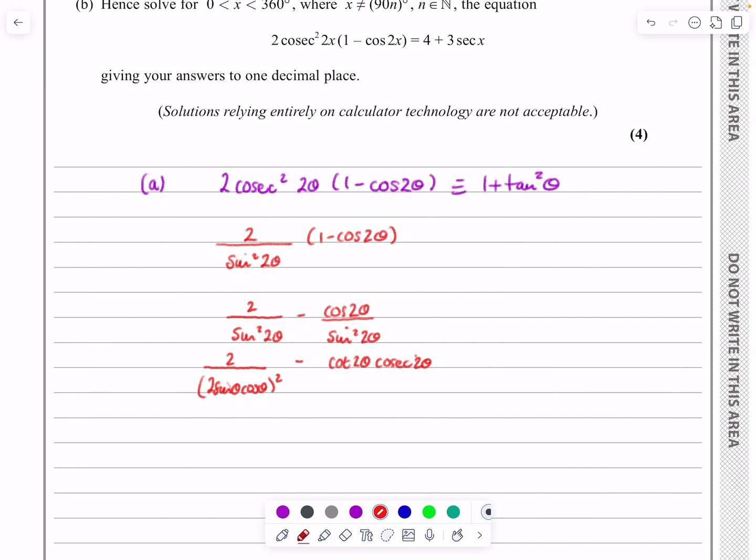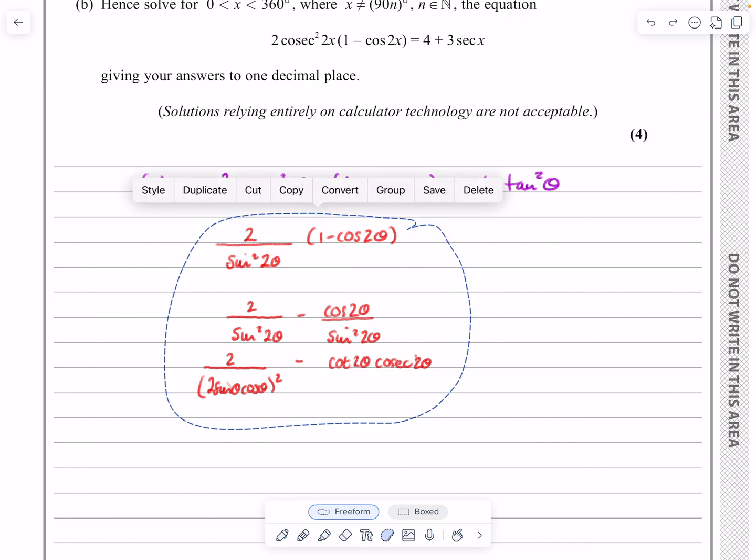But at that stage there, I just looked at the answer and thought, I'm not getting anywhere with this. It's not making it any simpler. What I really want to do is to get rid of the double angle parts there and change the double angles to single angles. So when I did do this question, I got that far and then said, no, I'm going to start again.